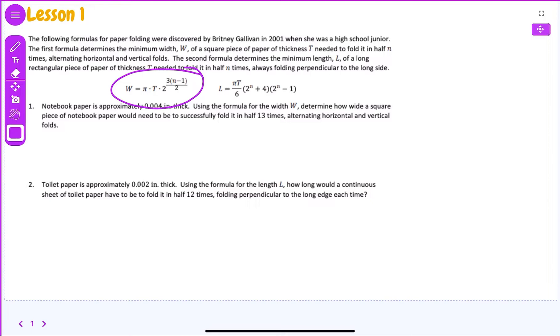t, good. So W equals pi times 0.004 times 2, and that is raised to the 3 times 13 minus 1 over 2 power. Now there's a lot going on here, but we never leave order of operations. We always follow PEMDAS, so we're going to work with parentheses, exponents, and all the way back down.